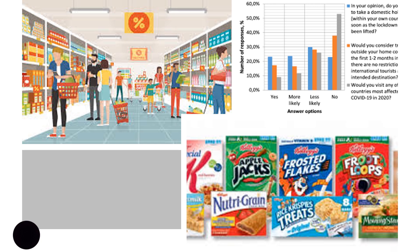It is important to note that mixed method research does not only mean collecting data — it also requires carefully considering the relationship between the two kinds of data and the method flexibility. You may find differing or even conflicting results by combining quantitative and qualitative data, so it is up to the researcher to carefully analyze these results and consider them in the context of the research question to find meaningful conclusions.